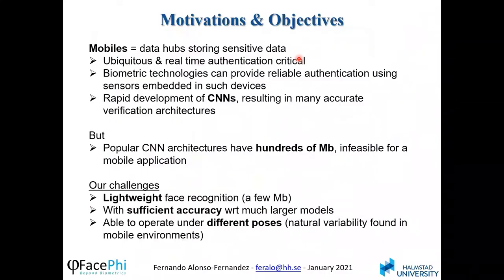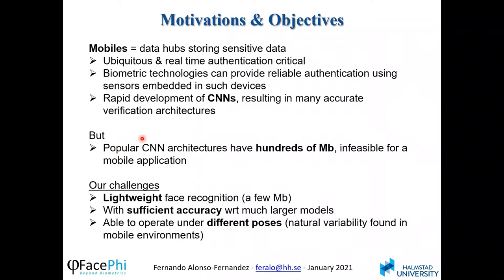Our motivation comes from the use of mobiles, which today are data hubs with sensitive data. It's critical to have authentication in real time and in a ubiquitous way, and biometric technologies can be a reliable method using sensors embedded in those devices. The rapid development of convolutional neural networks has resulted in many accurate verification architectures. However, popular architectures have hundreds of megabytes, which is infeasible for a mobile application. Our challenges are the use of a lightweight face recognition model of just a few megabytes with sufficient accuracy, able to operate under different poses.